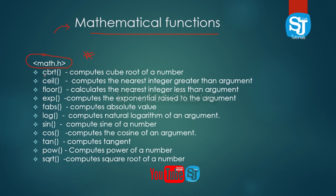The first mathematical function is cbrt (cube root). The second one involves the ceiling function. The ceiling function rounds a value up. The floor function rounds a value down.